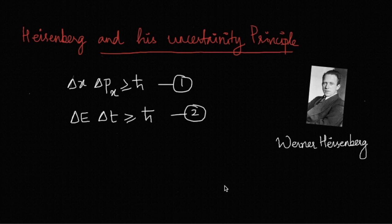This is the mathematical statement of uncertainty principle proposed by Werner Heisenberg in the year 1927, and he was awarded the Nobel Prize for the same in the year 1932.